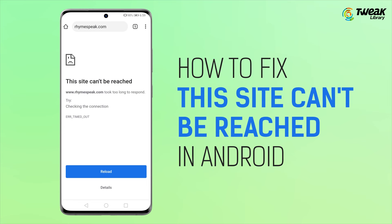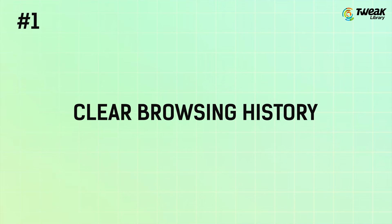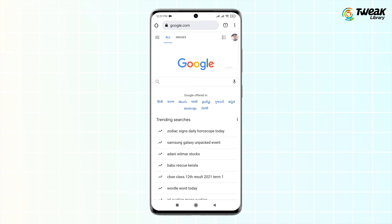Here are some fixes for the 'This Site Can't Be Reached' issue on Android. Number 1: Clear the Browsing History. Tap on the three vertical dots at the top right corner of your browser.